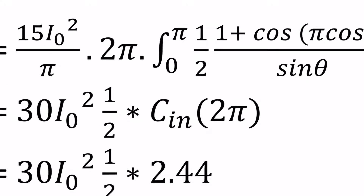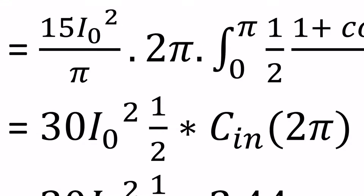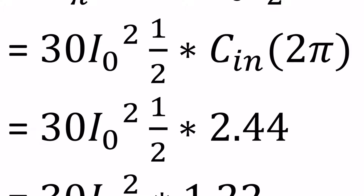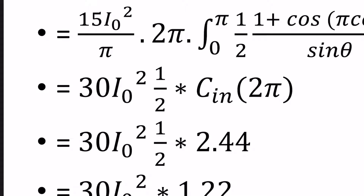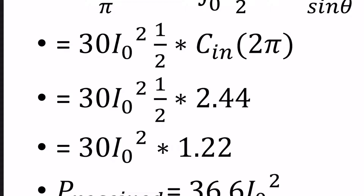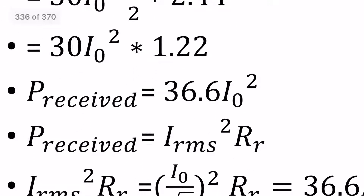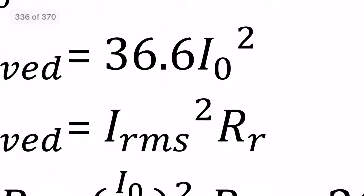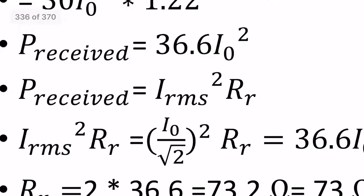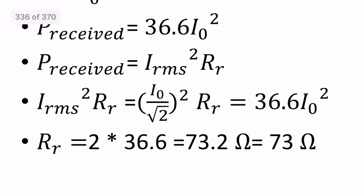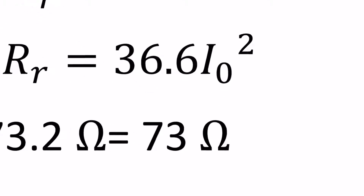The cosine integral function value is looked up from a table. The cosine integral of 2pi equals 2.44, so 1.22 × 30 i₀² gives us 36.6 i₀². Multiplying through, we get total power = 36.6 i₀². From the short dipole derivation using the same steps, power received equals I_rms² × R_r. Since I_rms = i₀ / √2, we get (i₀/√2)² × R_r = 36.6 i₀², and after cancellation R_r = 2 × 36.6 = 73.2 ohm.